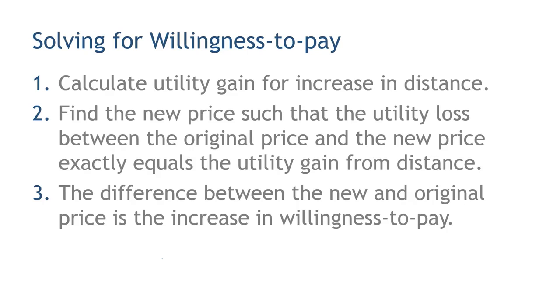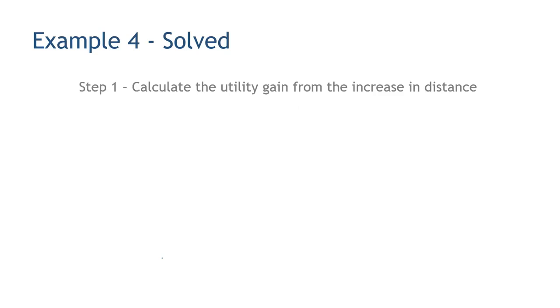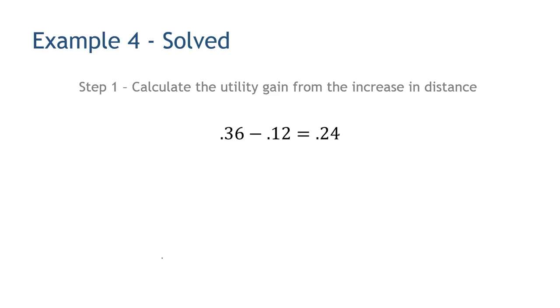Let's apply this to the data. We're going to calculate the utility gain for an increase in distance — that's 0.36 minus 0.12. Where does that come from? If you look at distance, 0.36 is for 15 yards further — that's the new ball — because our current ball is 10 yards further. The new ball would be 15 yards further, giving a utility of 0.36, and then we subtract the original utility of 0.12 for the 10-yards-further ball. So we have a difference of 0.24.